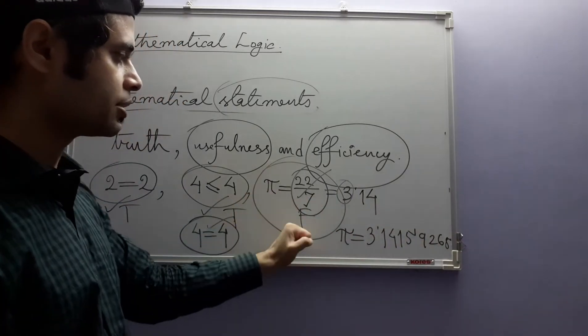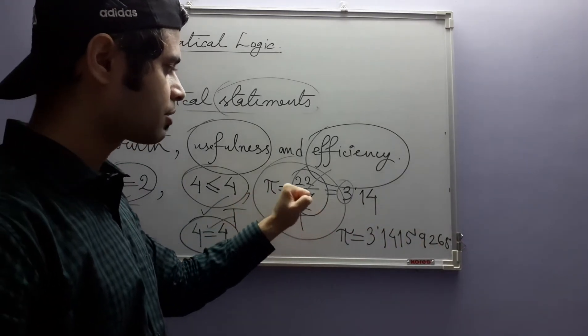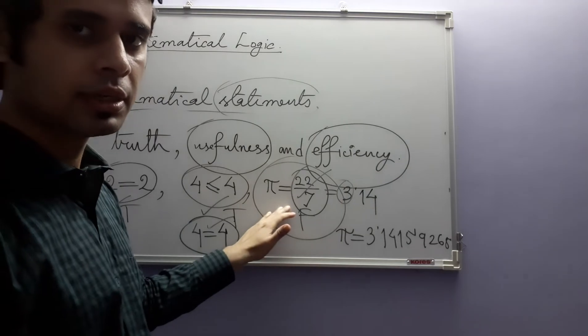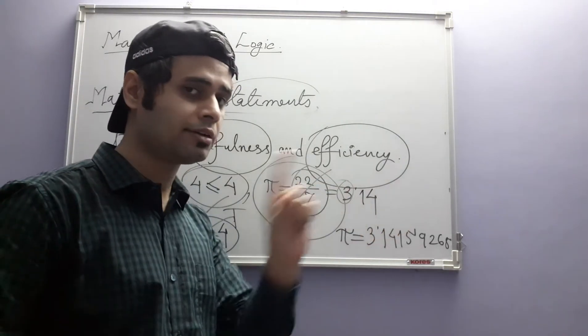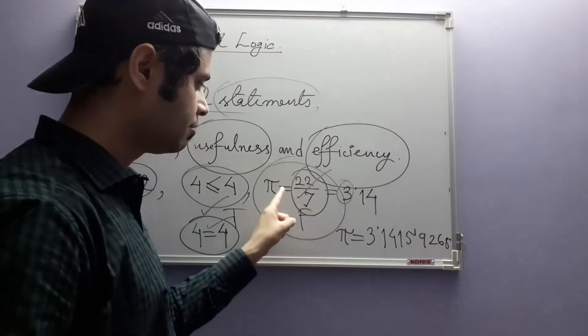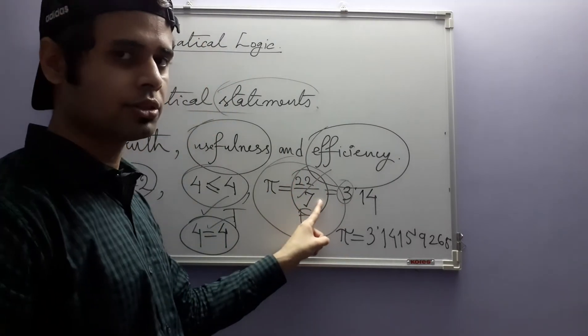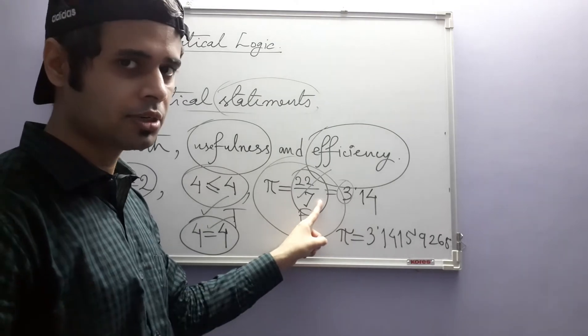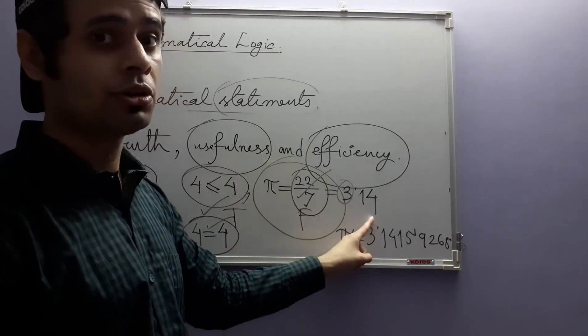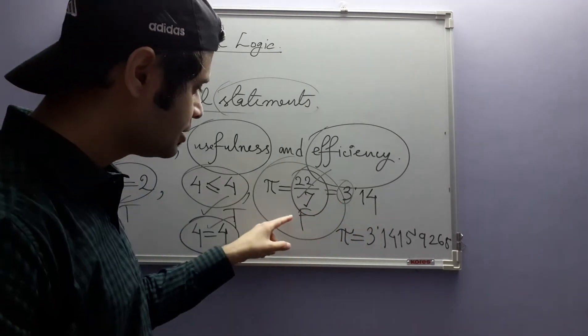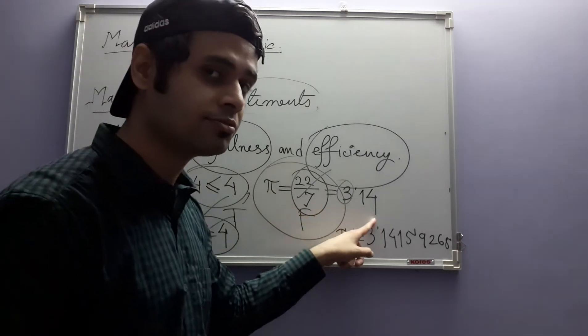Now in some situations, in fact you come across some problems in school level, where you use this value of pi. This is not a value of pi, this is not equal to pi, but it is close to pi, although it is a very crude approximate value, but it gets the job done. So although this statement is false, it is still useful.